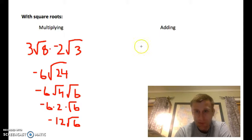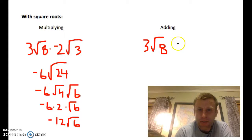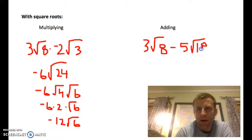For adding, different story, or same as above, but they've got to be like in order to add. So, let's do three square root of eight minus five square root of eighteen. These are not, they don't look alike. The radical parts don't look alike. So, can we combine them? Well, not right now, but if we simplify the radicals, hopefully we can see that they might be alike.